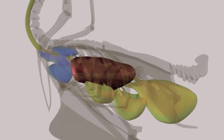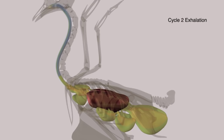During the second exhalation, the anterior sacs contract. The air is then driven out into the trachea, where it passes up and out of the nostrils.